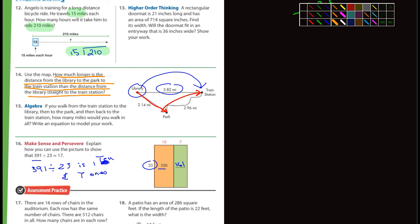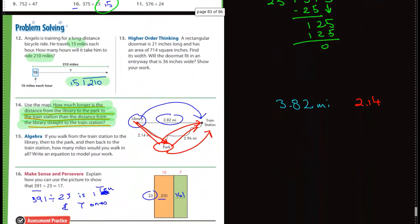And then for number 14, I talked about that. It says, how much longer is the distance from the library to the park to the train station than the distance from the library straight to the train station? Well, the first one I looked at was going from the library to the train station. The library to the train station is 3 point... that didn't come in very well. Using the dark blue to write doesn't work really well. From the library to the train station is 3.82 miles. And you're going to be comparing that to, and I did it in red here, going from the library to the park and then from the park to the train station. So from the library to the park is 2.14 miles.